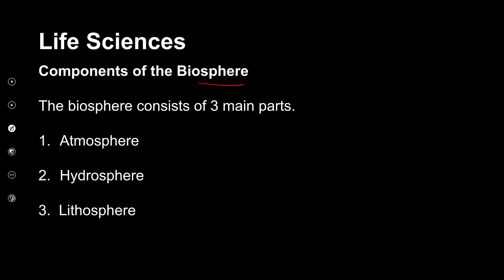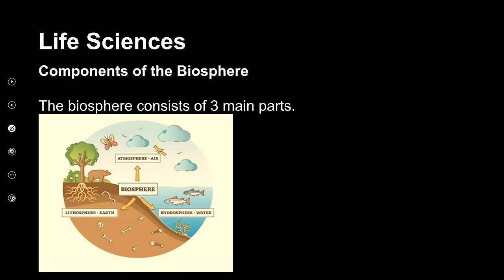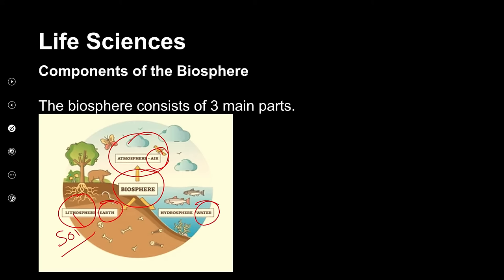The components of the biosphere can be divided into the atmosphere, the hydrosphere, and the lithosphere. In terms of the living components, they interact with the atmosphere, which is predominantly the air in our environment, as well as the earth, which is the lithosphere — referring to the soil and rocks that life forms live on — as well as the aquatic parts, or the water in our oceans, rivers, seas, and lakes. These three components collectively contribute to the existence of life on earth.